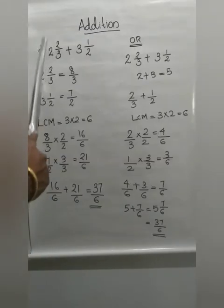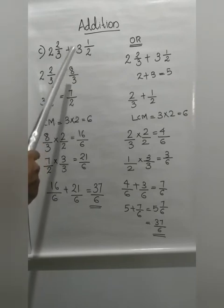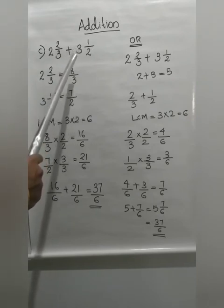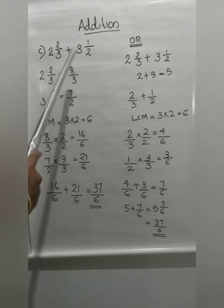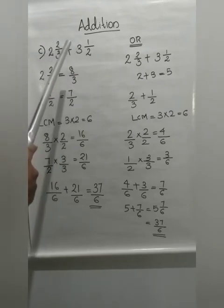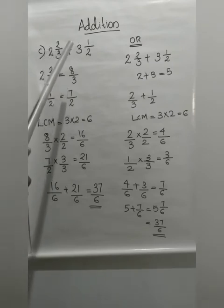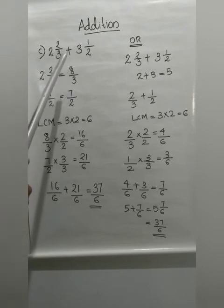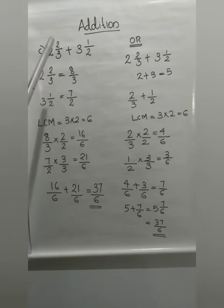Next example: 2 and 2 by 3 plus 3 and 1 by 2. This is a mixed fraction, and it is also an unlike fraction. So how can we add two mixed fractions? There are two methods you can follow for addition of mixed fractions. The first method: you have studied how to convert a mixed fraction into an improper fraction. So convert the given two mixed fractions into improper fractions.